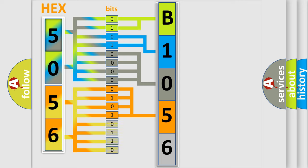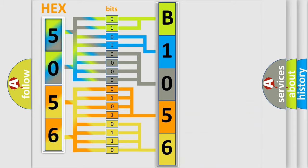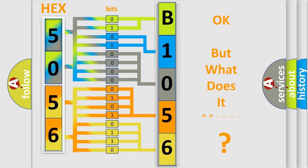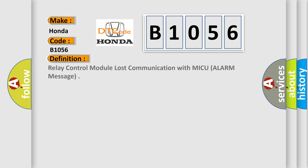A single byte conceals 256 possible combinations. We now know in what way the diagnostic tool translates the received information into a more comprehensible format. The number itself does not make sense to us if we cannot assign information about what it actually expresses. So, what does the diagnostic trouble code B1056 interpret specifically for Honda car manufacturers? The basic definition is: Relay control module lost communication with MICU — alarm message.